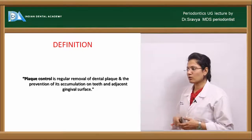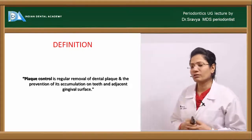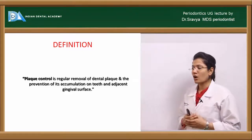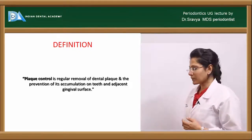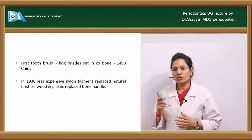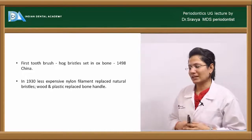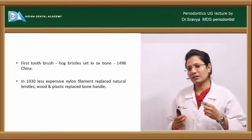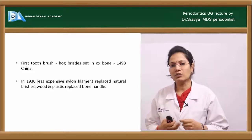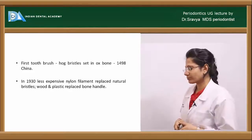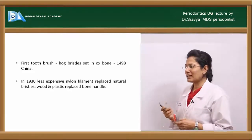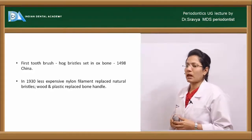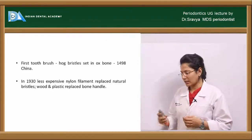How do we define plaque control? It is a regular removal of dental plaque and prevention of its formation on the teeth and adjacent gingival surfaces. The first toothbrush was introduced in China in 1498, wherein they used natural hedgehog bristles impregnated into ox bone. In 1930, less expensive nylon filament replaced these hedgehog bristles and wooden plastic replaced the ox bone.